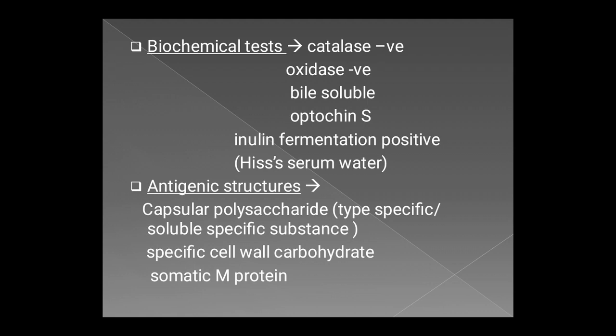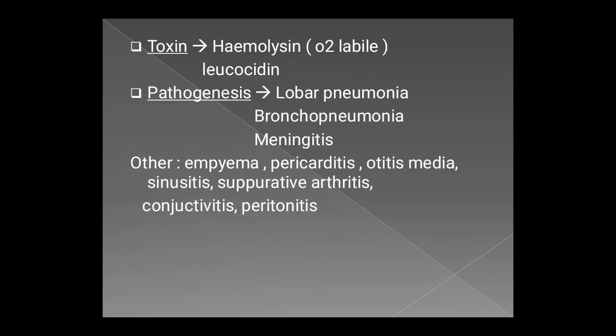Now coming to the antigenic structures of pneumococci. The first is the capsular polysaccharide antigen, which is type-specific and also known as soluble specific substance. The next is the specific cell wall carbohydrate, and the innermost is the somatic M protein.